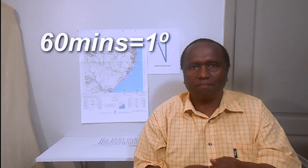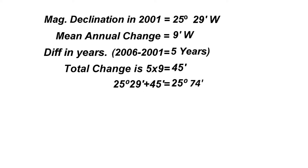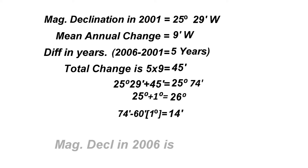When you have 74 minutes, you must make an adjustment because 60 minutes equals one degree. So from that 74 minutes you take out one degree and carry it over, giving you 26 degrees. The remainder — when you subtract 60 from 74 — is 14 minutes. Therefore the new magnetic declination for the year 2006 is 26 degrees 14 minutes west.